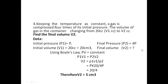Now let's do Example 2, a problem based on Boyle's law. Listen to the question: keeping the temperature constant, a gas is compressed to four times its initial pressure. The initial pressure is P, so the final pressure is 4P. The initial volume V1 is 20 cc (cubic centimeters). We need to find the final volume V2.